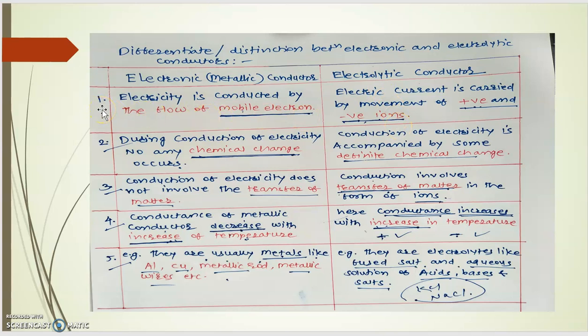So now the first point is, electricity is conducted by the flow of mobile electron. That means free electrons are available in case of metallic conductors or electronic conductors, and because of that free electrons, electricity can be flowed whenever we have applied electric field to that conductor. But in case of electrolytic conductor, the electric current is carried by the movement of positive and negative ions. So presence of positive and negative ions in case of electrolytic conductor, there is no any kind of free electrons available.